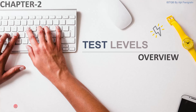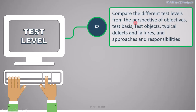Coming to test levels, let's see the overview. It is of type K2, because we have different levels and at all the levels we need to do comparison between the test level objectives — what is the objective of component testing and how it is different from integration testing, system testing, or acceptance testing. This differentiation should be clear, that is why it is K2. Questions will be direct but you should know the objective of each level clearly.